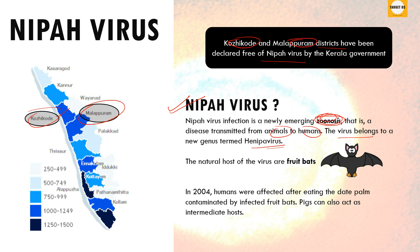The natural host of the virus are fruit bats — a very important point. In 2004, humans were affected after eating date palm contaminated by infected fruit bats. Pigs can also act as an intermediate host — remember this point.